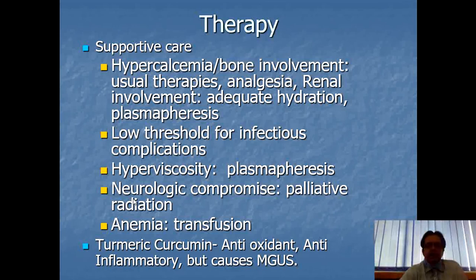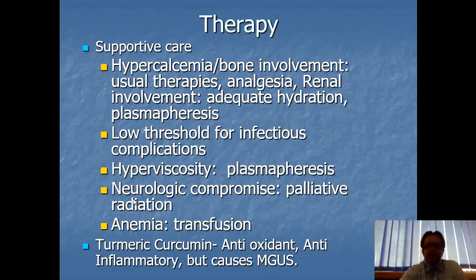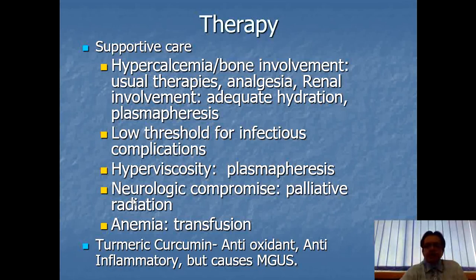Turmeric/curcumin, which is an antioxidant and anti-inflammatory agent, can cause MGUS — monoclonal gammopathy of unknown significance. Turmeric is helpful in cases of multiple myeloma and other tumor lysis syndromes, but it causes monoclonal gammopathy of unknown significance.